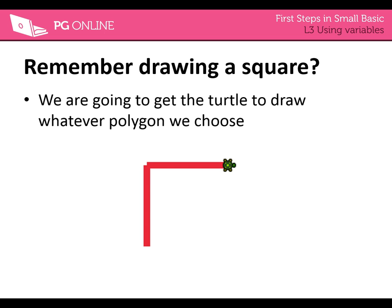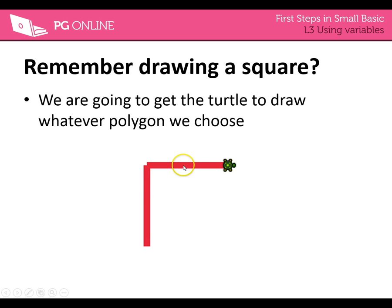Remember we looked at drawing a square and we wanted to get the turtle to draw whatever polygon we chose. So if we started here we'd move forward 100, turn right 90 degrees, then move 100 again. Finish it off with another turn right, move forward, another turn right, move forward. So the pattern is: move, turn, move, turn, move, turn, move, turn — and we repeat that the number of times in the shape.